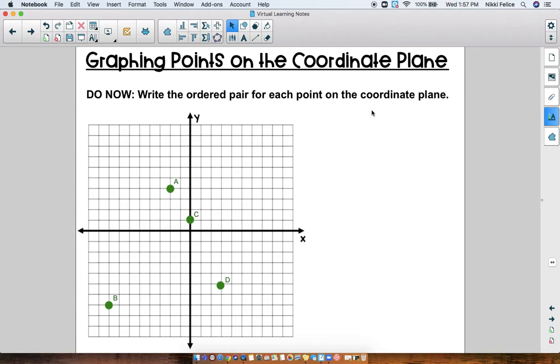Hey guys, so today's day two of the coordinate plane and we are going to learn how to graph points on the coordinate plane today. But before we do, let's do a little bit of a do now. I want you guys to write the ordered pair for each point on the coordinate plane. So there's four points, A, B, C, D. Pause the video now and try to write the ordered pair for each one.